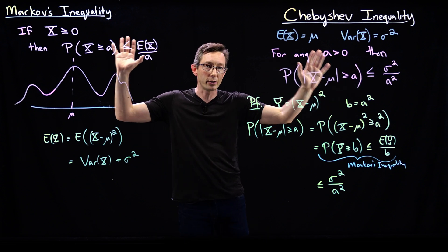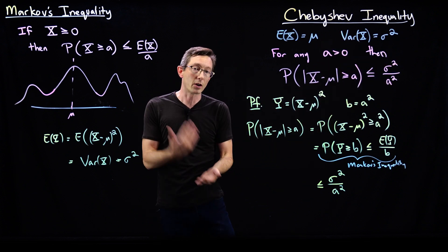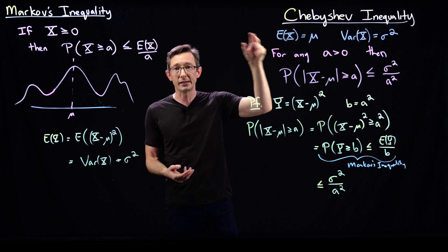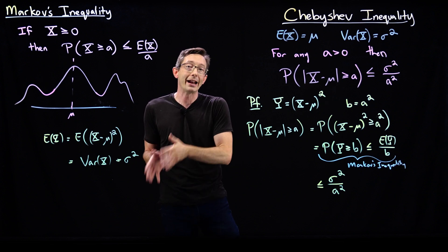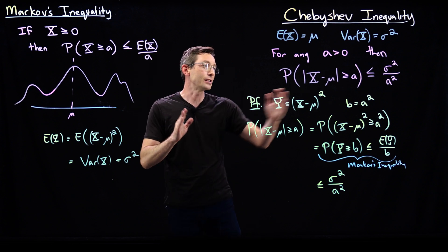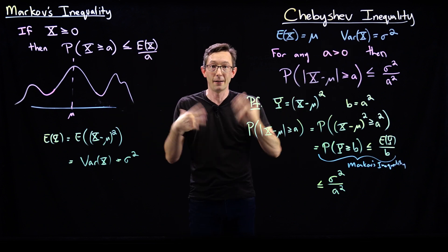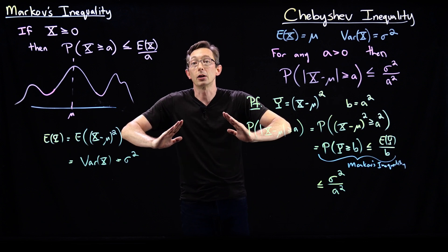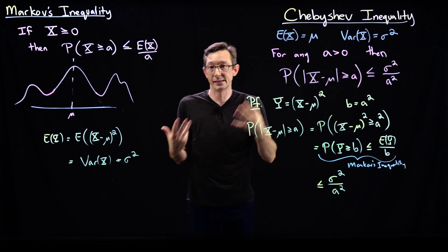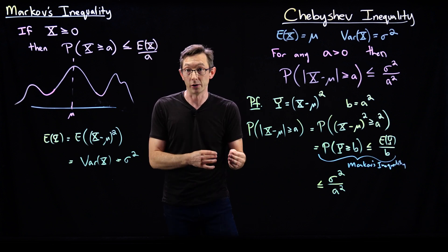These are both super useful inequalities — we use them all the time in probability and statistics. Soon we're going to use Chebyshev's inequality to prove the law of large numbers, one of the cornerstone results in probability and statistics, which states that if I randomly sample from a distribution x over and over and average those samples, that average will converge to the expectation value of x. We're going to bound the variance of the deviation of that sample mean from the expectation value to prove the law of large numbers.